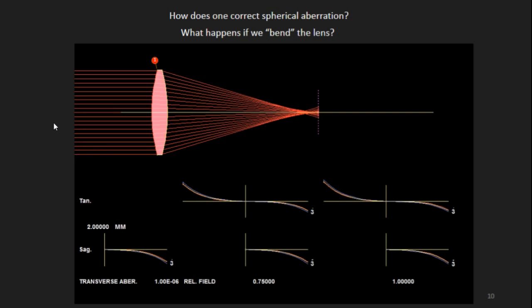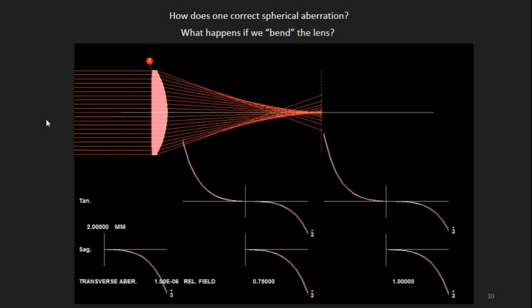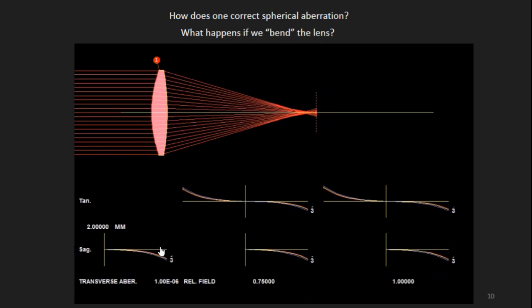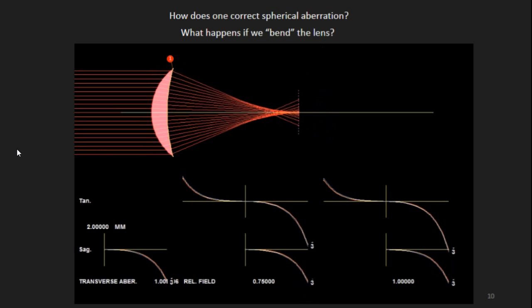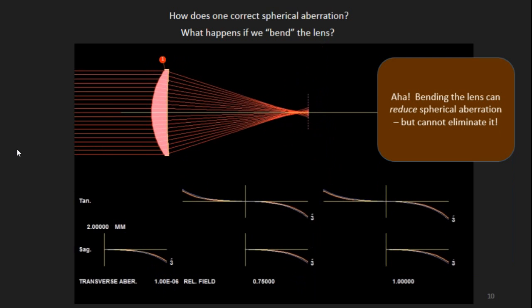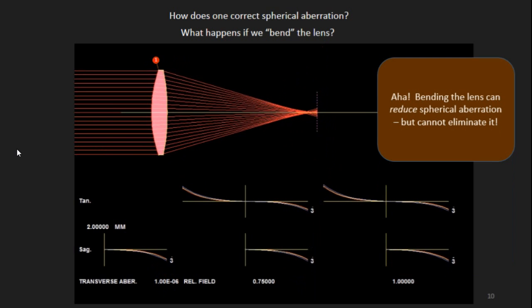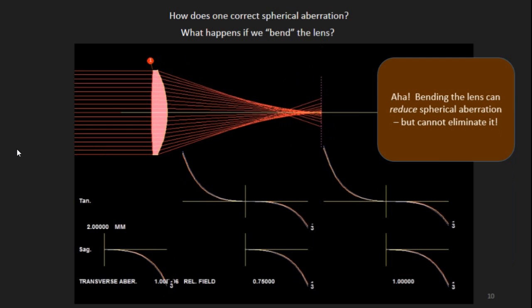Now how do you correct spherical aberration? What happens if we bend the lens? Well watch these curves. They get smaller, but they never go to zero. Bending the lens can reduce spherical aberration, but cannot eliminate it.